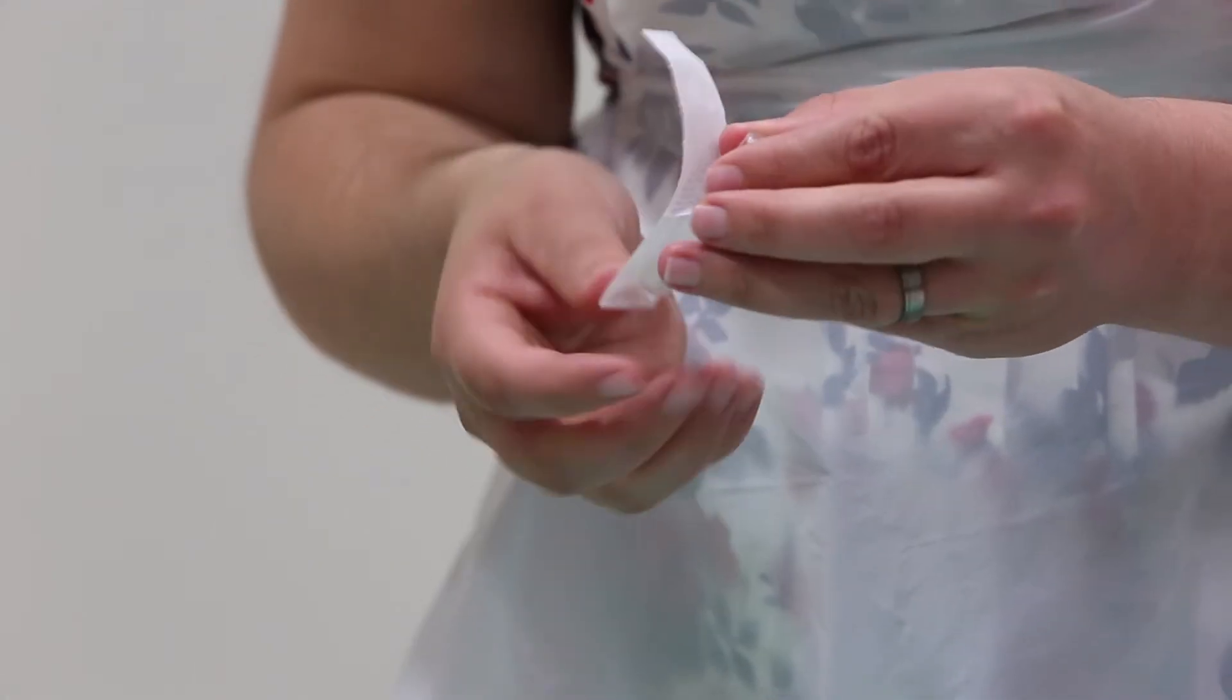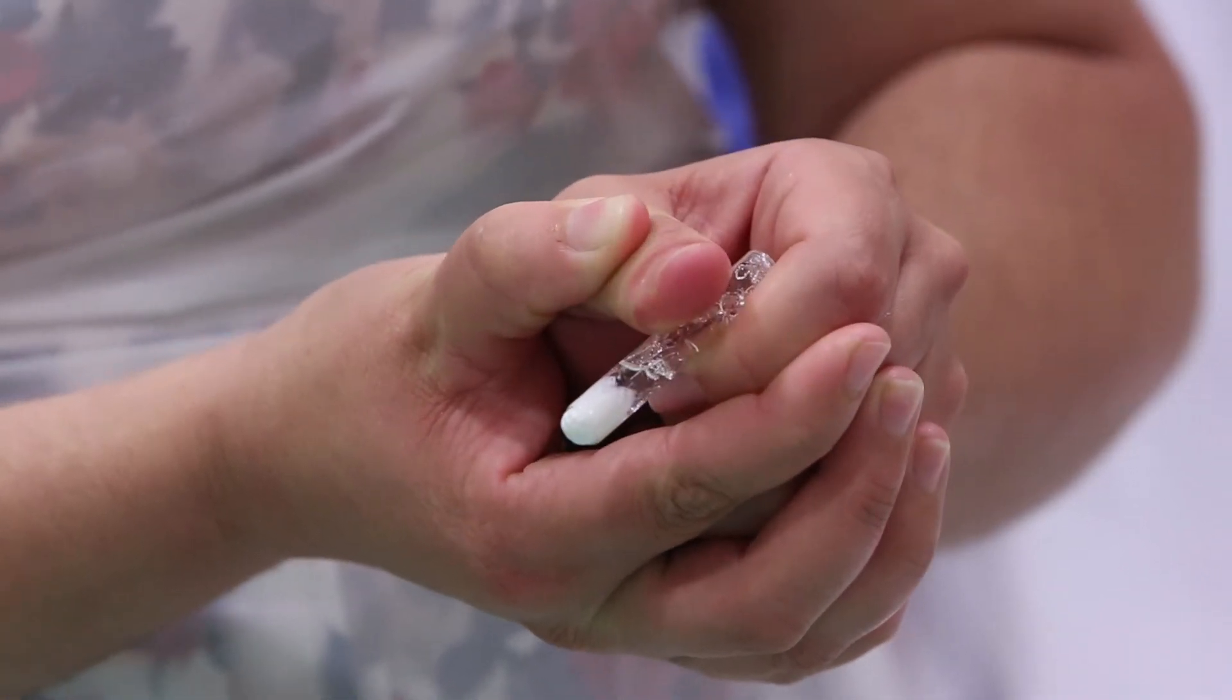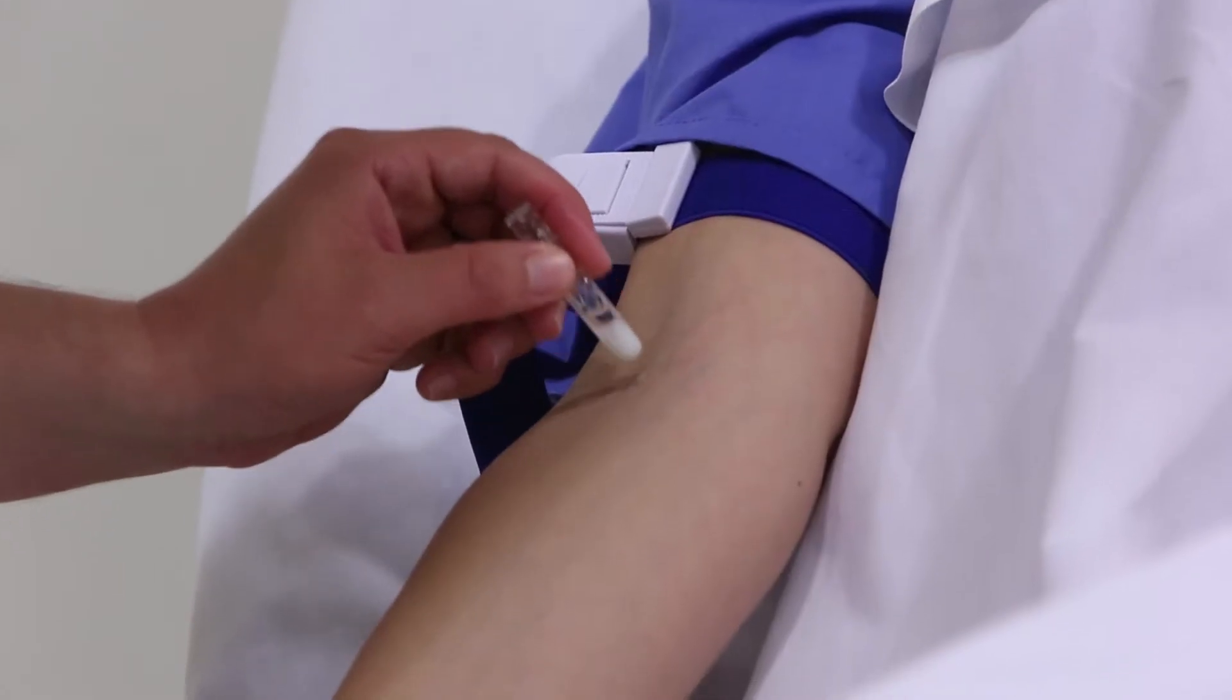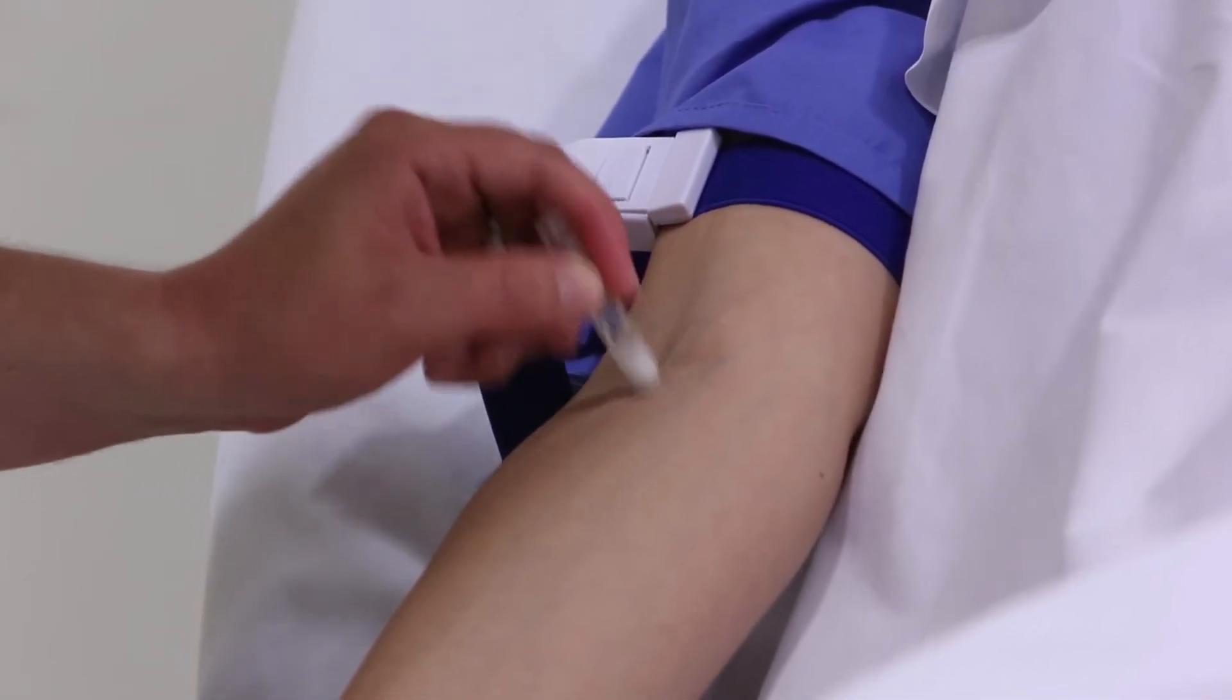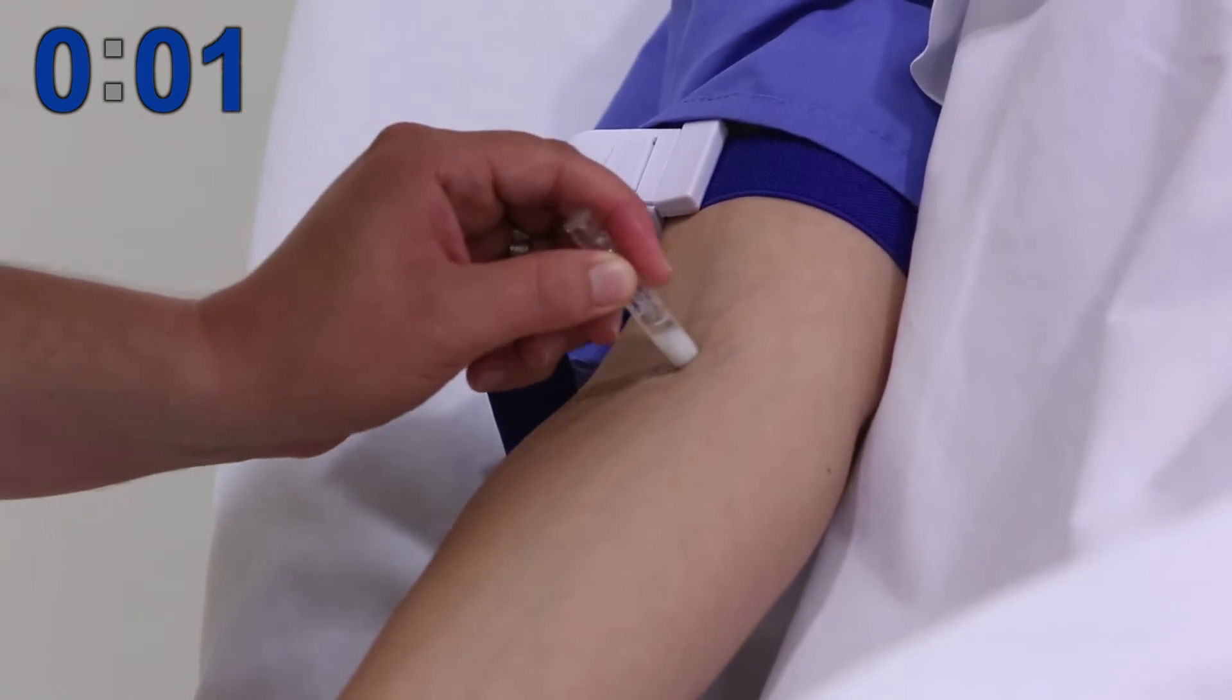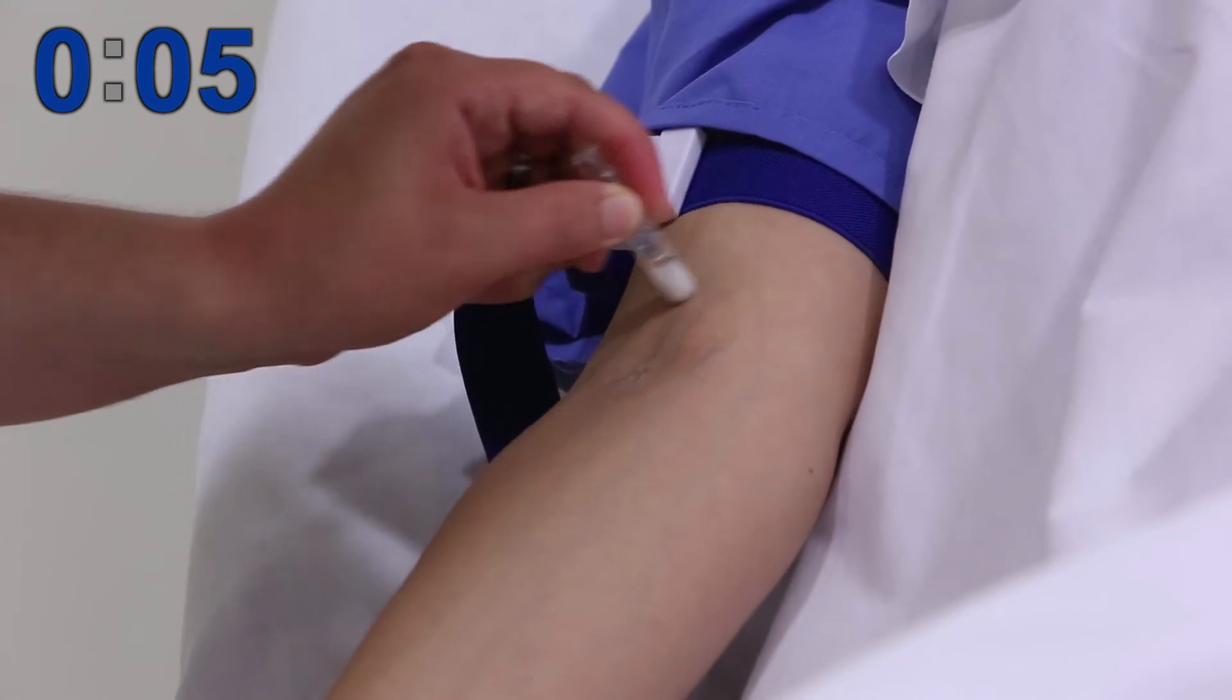Remove the chloroprep applicator from its cover, pinch once and allow the cotton tip to soak. Next, gently dab onto the patient's skin. Proceed to clean the venipuncture site with the applicator starting from the center of the site and moving back and forth in a zigzag pattern for 30 seconds.